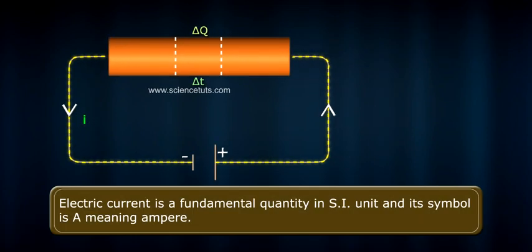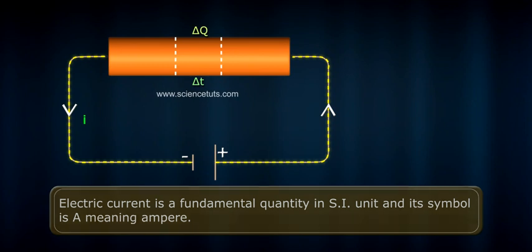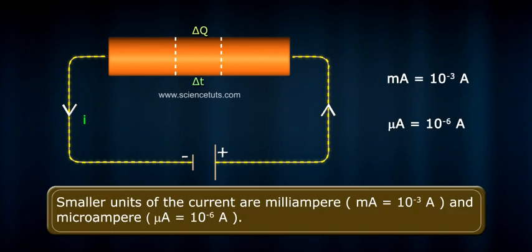Electric current is a fundamental quantity in SI units and its symbol is A, meaning ampere. Smaller units of current are milliampere (mA = 10⁻³ A) and microampere (μA = 10⁻⁶ A).